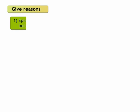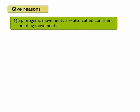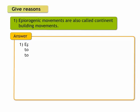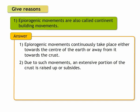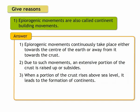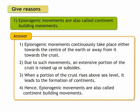Give reasons. 1. Epi-aurogenic movements are also called continent building movements. Answer. Epi-aurogenic movements continuously take place either towards the center of the earth or away from it towards the crust. Due to such movements, an extensive portion of the crust is raised up or subsides. When a portion of the crust rises above sea level, it leads to the formation of continents. Hence, epi-aurogenic movements are also called continent building movements.